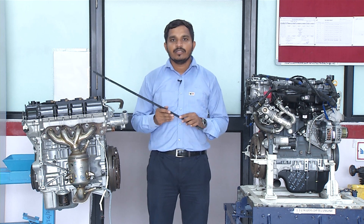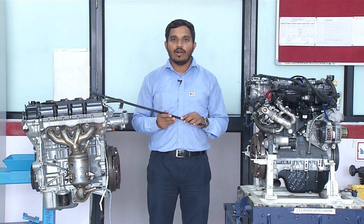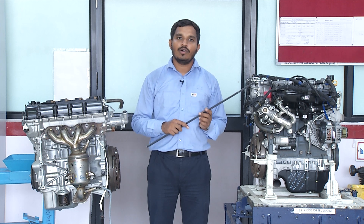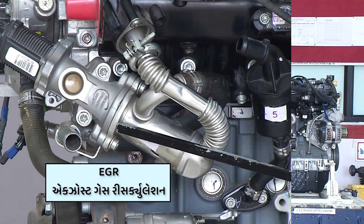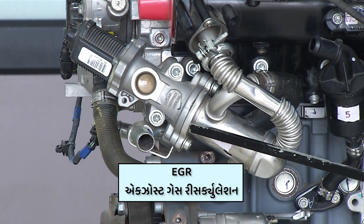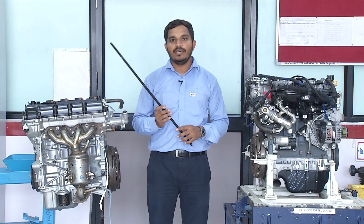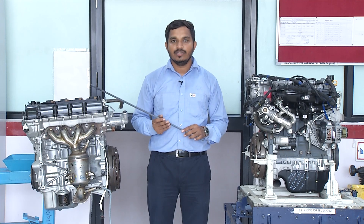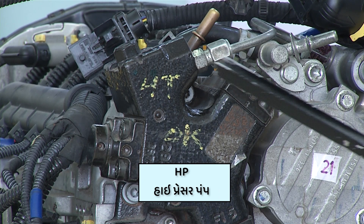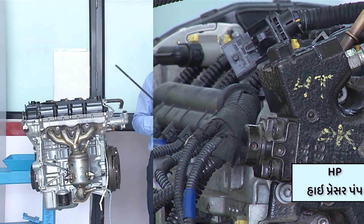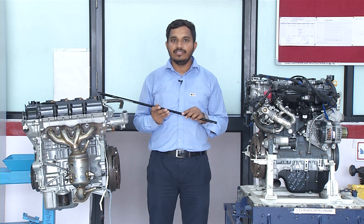In a petrol engine, the throttle body is higher. The diesel engine is simpler in some respects. Exhaust gas recirculation in a petrol engine is easier. The diesel engine uses a high pressure pipe, while the petrol engine uses a normal pipe.